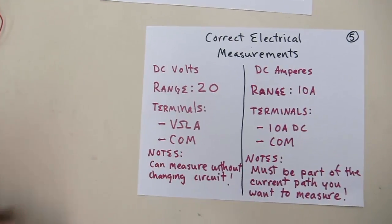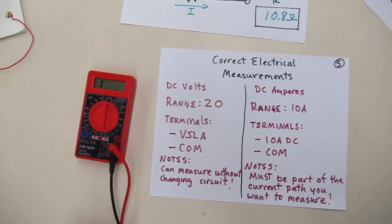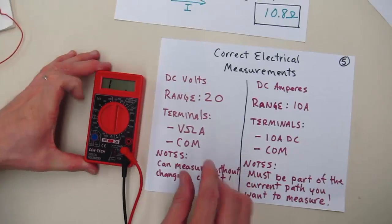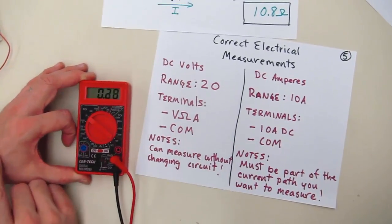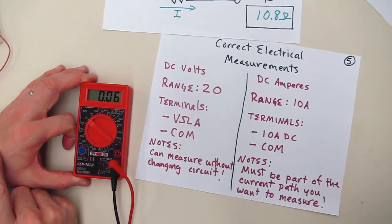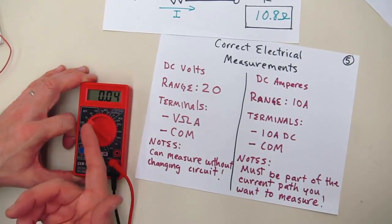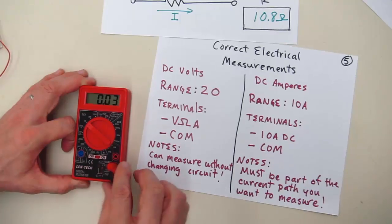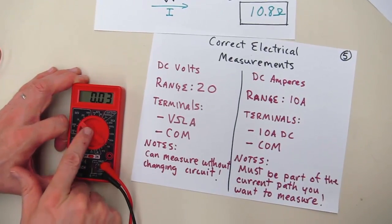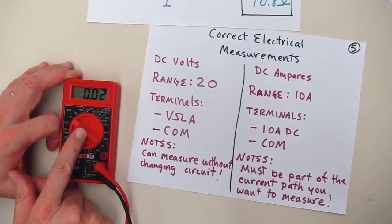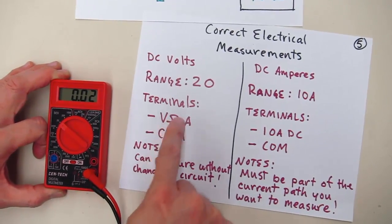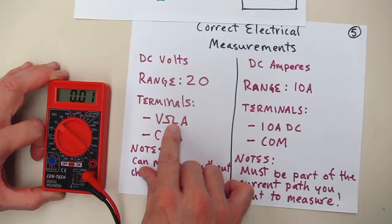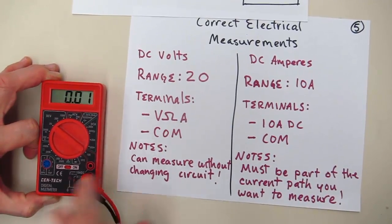Again, the important part when it comes to measuring voltage is to choose your range correctly. So in class, we'll be using a 20-volt range. We'll be using our UNO32s as a 5-volt power supply initially, and so we'll be able to take measurements on the 20-volt range. You want to make sure you have the probe set up correctly. In this case, to measure voltage, you want to use the volt ohms-amps scale and the common.